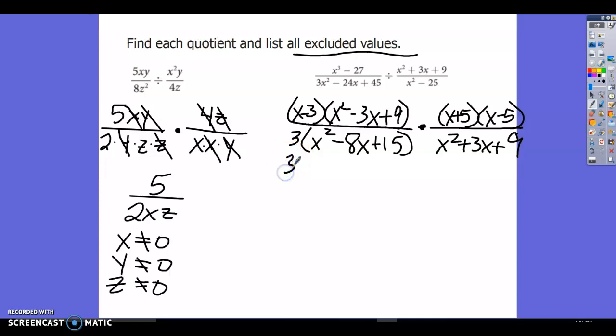3 comes out of 3x squared 3 times and leaves x squared. 3 goes into negative 24, negative 8 times. And the x is still there because I didn't pull it out. And then 3 goes into 45. 3 goes into 4 one time, one left over. So 3 goes into 15 five times. So now I need to see if I can factor this further. So let's see if we have 3 times... What multiplies to give me 15 and adds to give me 8? That would be 5 and 3. I need a plus when I multiply, so same signs. Two negatives give me a negative 8 when I add.